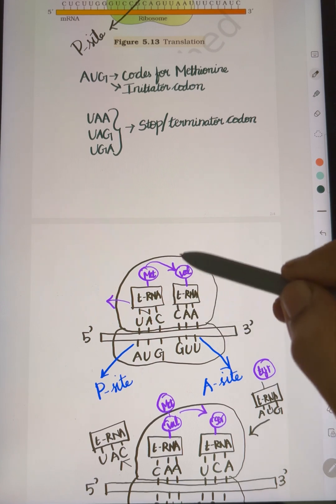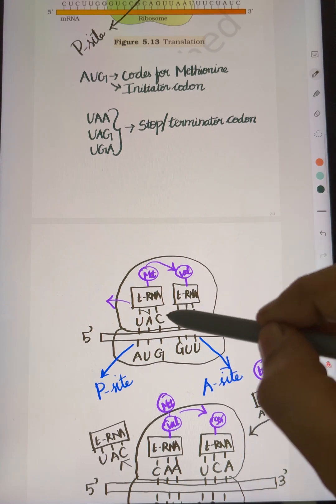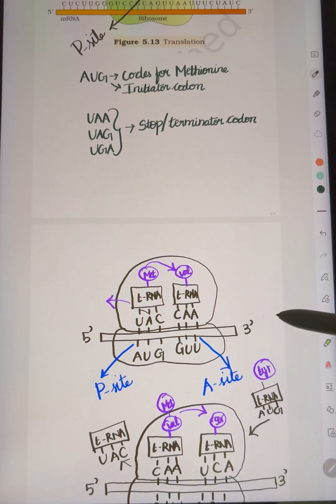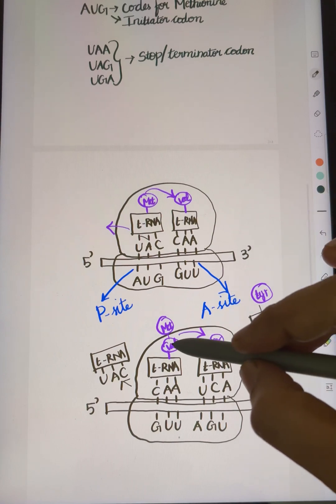Now the ribosome with large and small subunit will move along the mRNA. This tRNA releases. The tRNA will bind to the A-site. This amino acid is here.